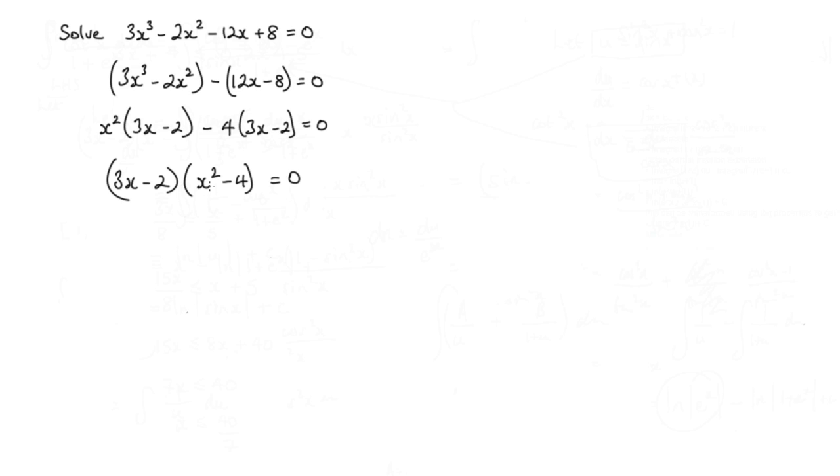Now, x squared minus 4, that's the difference of two squares. So I've got 3x minus 2, and I'll have x plus 2 and x minus 2. So either one of these could be equal to 0.